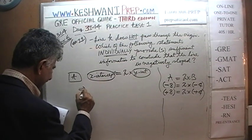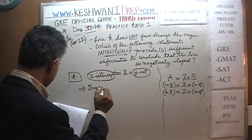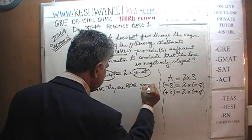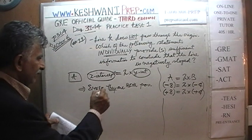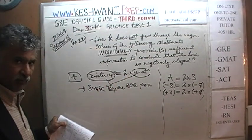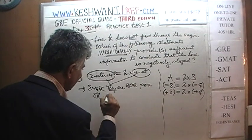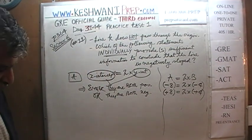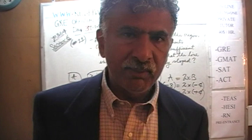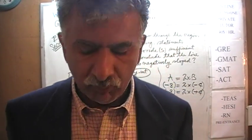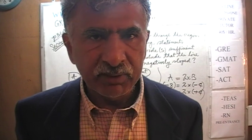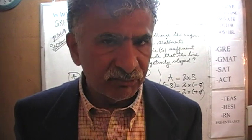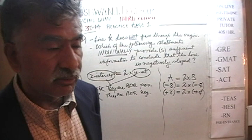If A is 2 times B, they must take the same sign. If B is negative 4, A must be negative as well. If B is positive, A must also be positive. They must take the same sign. So here, we are told that the X-intercept is equal to 2 times the Y-intercept. What this implies is that either they are both positive, or they are both negative.